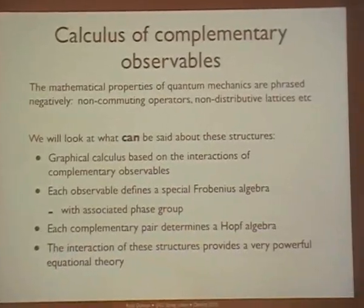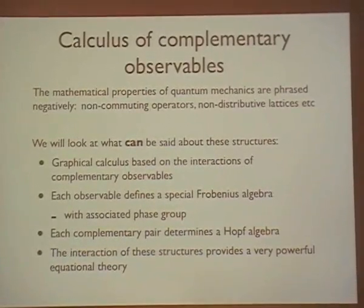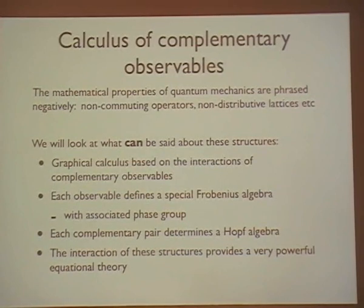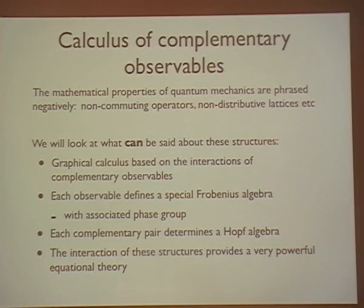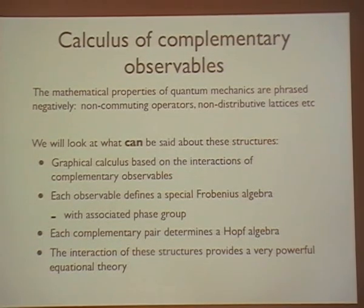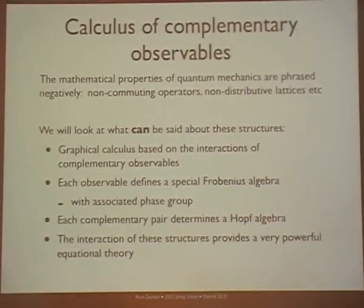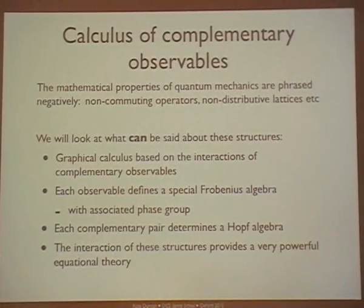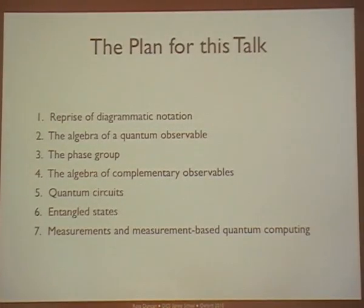What I'm going to introduce now is a formal calculus based on what you can actually say — positive things you can say about complementary observables. What do they let you do? As opposed to the way we often talk about complementary observables in terms of things you can't do: operators don't commute, you don't get distributive lattices, you can't observe the state directly. So what we're going to do here is show formulas based on things you can do using complementarity.